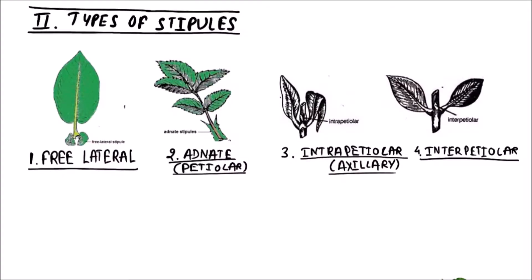Welcome to Studio Biology. In this video, we are going to discuss the various types of stipules. The first one is Free Lateral stipules. These are small, free, green, and lateral outgrowths.